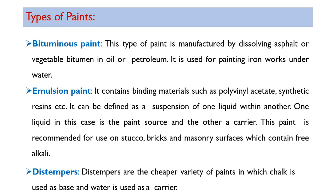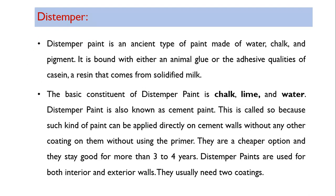Distempers are the cheaper variety of paints in which chalk is used as a base and water is used as a carrier. In contrast, oil paints use oil as a carrier. Distemper paint is an ancient type of paint made of chalk, coloring pigment, and water used as a carrier.